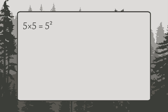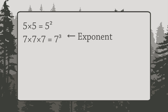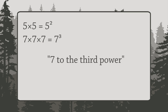Using exponents, we can write 7 times 7 times 7 like this. The little 3 is the exponent, and you say this as 7 to the third power. If the exponent is a 3, you can also say 7 cubed, because it's the volume of a cube with sides of length 7.